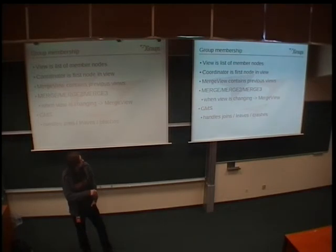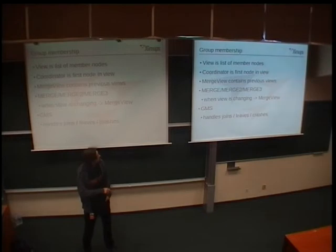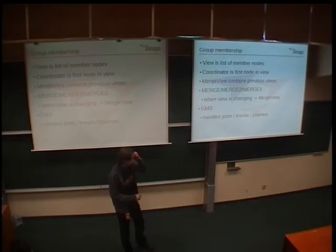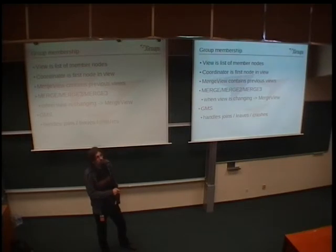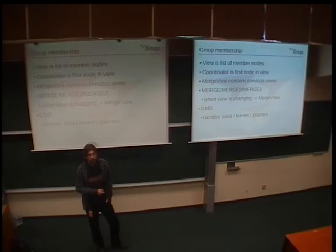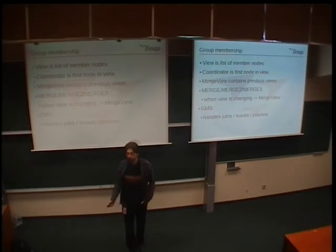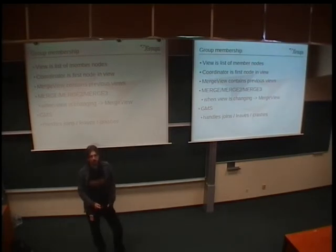Group membership: the GMS protocol handles new joins of nodes, leaves, and crashes. In order to do that it keeps a list of member nodes in the cluster which is called a view. There's always one special node in the view which is called coordinator because this is the node which handles the joins and leaves, and it can have some special functionality in other protocols. So the cluster is not totally symmetric, there is one special node.